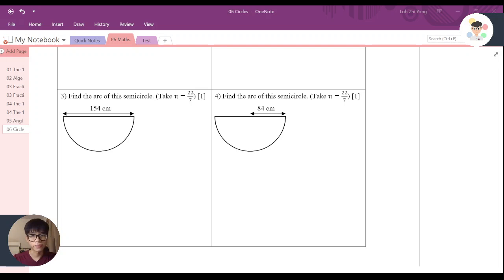Let's look at this question. This question says, find the arc of this semi-circle. Again, what is the meaning of arc? Arc means this line. Can you see that?